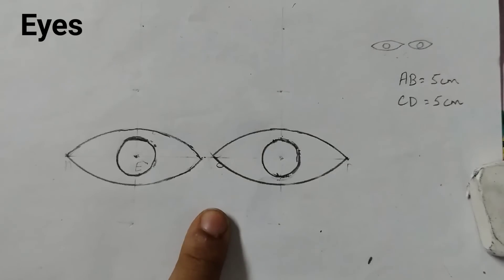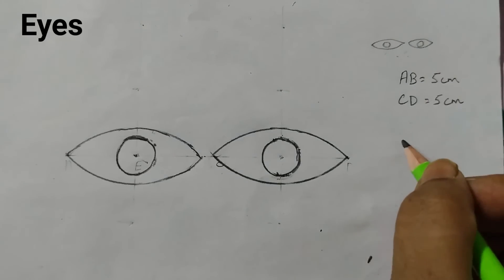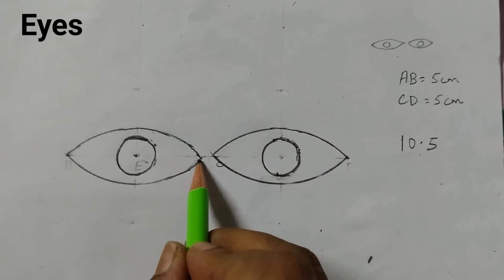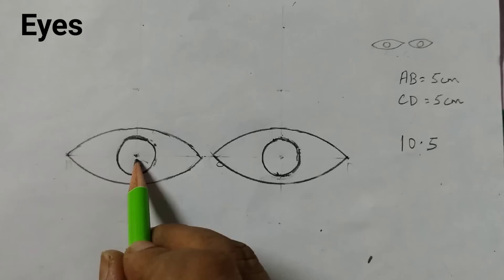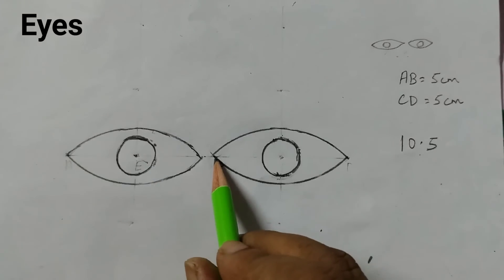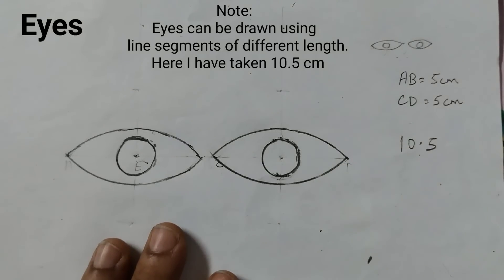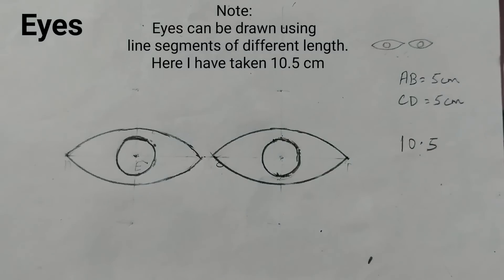Now, you see, our eyes are ready. What we did - first we drew a line of 10.5 cm, then we took 5 cm distance here and 2.5 here. This is how you need to do the construction of eyes. I hope this is helpful to you. Thank you.